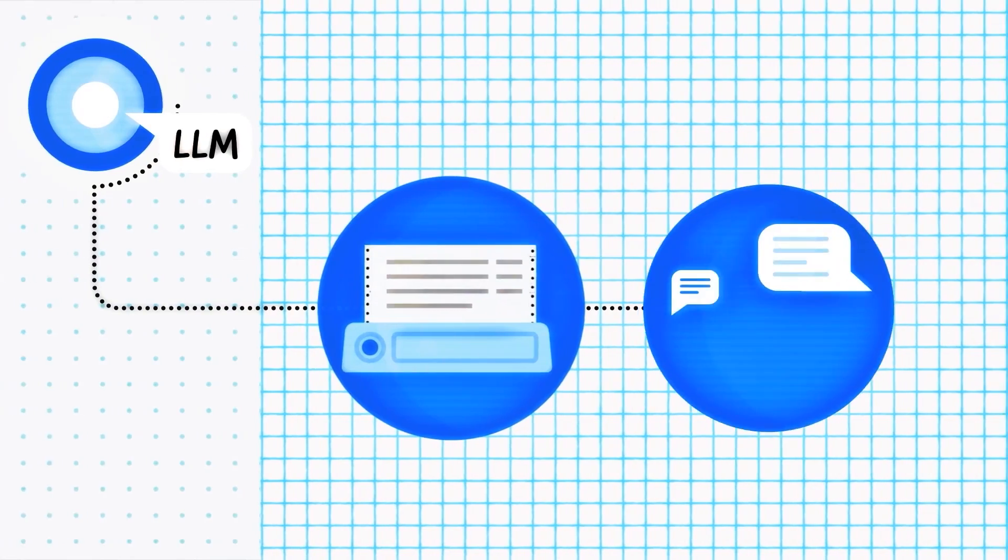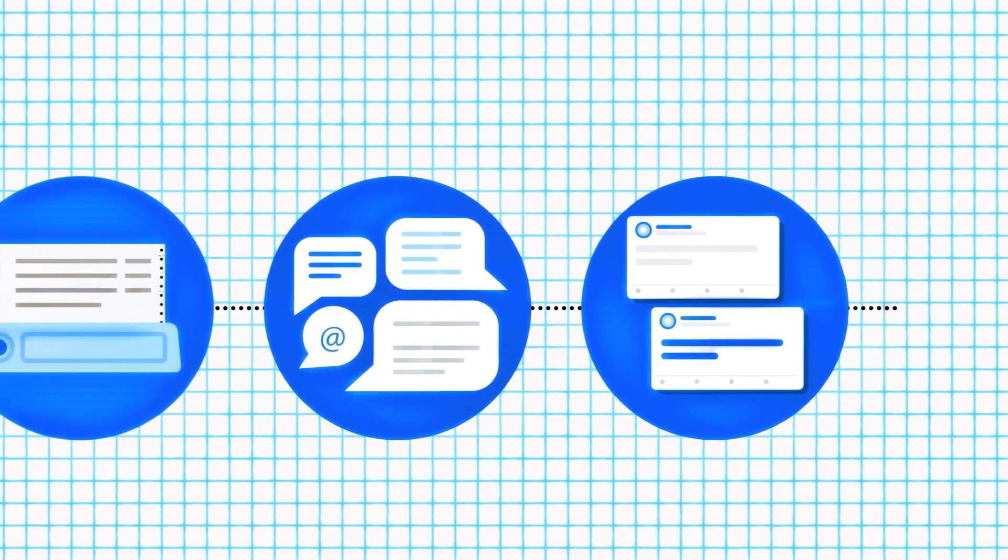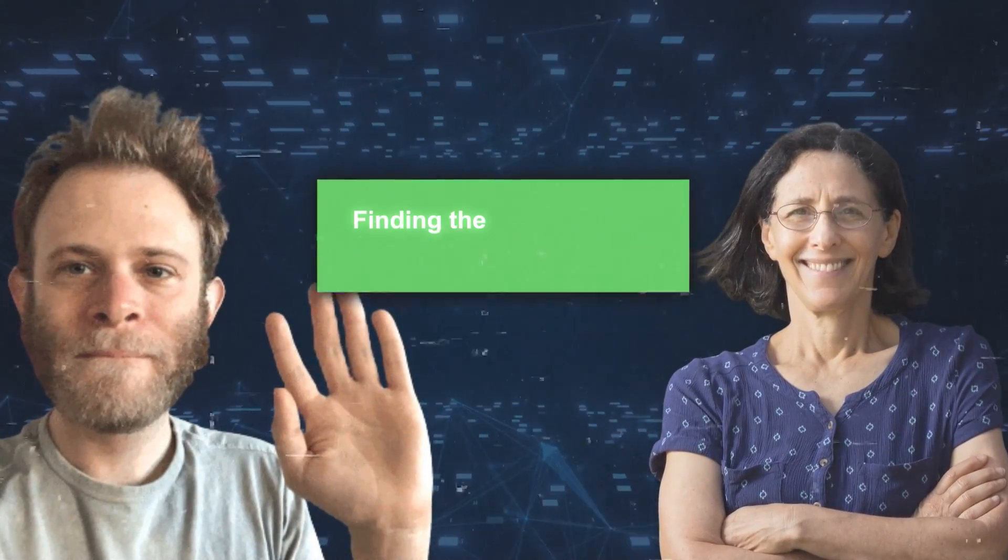Bowman does admit that the reasoning abilities of LLMs are spotty and more limited than in people. However, he believes these abilities are there and seem to get better as the model size increases. He expects future LLMs to be even better.